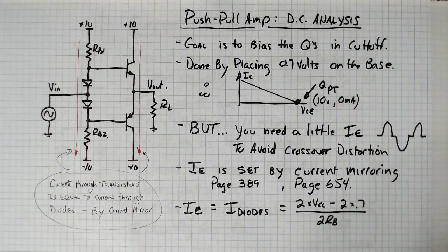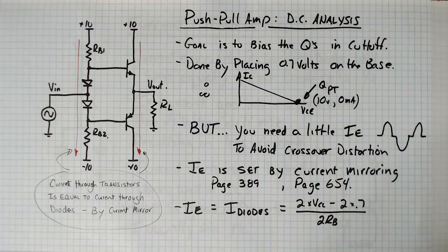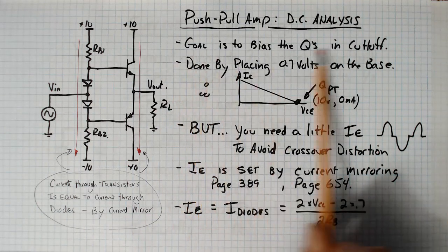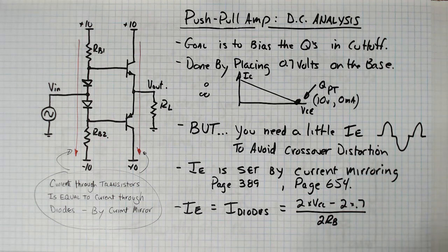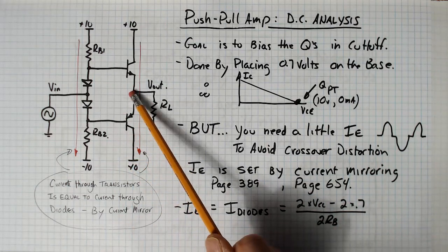The DC analysis for the push-pull amplifier is a little bit easier than some of the other ones. The big reason for this is that the goal right off the bat is to get the transistors biased in cutoff. So what you're trying to do is get this point right here and this point right here to be equal to zero volts.